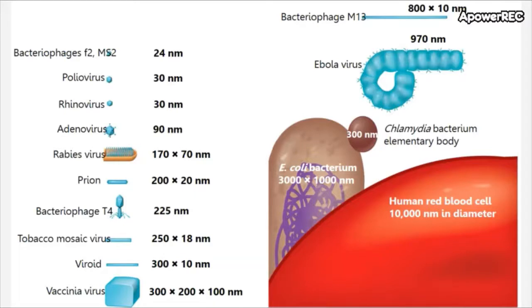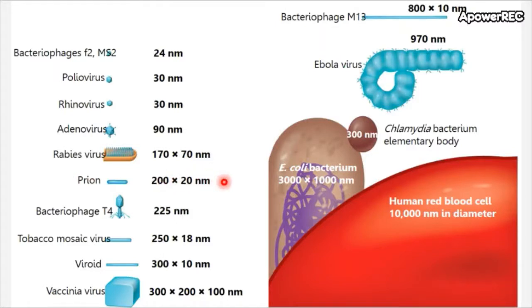This image shows a scale of viruses compared to other living organisms. The smallest viruses on this scale are bacteriophages, which infect bacteria. We also have poliovirus, rhinovirus, adenovirus, and rabies virus, which all infect humans. We have prions, which are just proteins and can range between 20 and 200 nanometers. To give you an idea, 20 nanometers is about the distance of the plasma membrane from inside to outside.